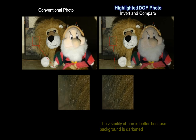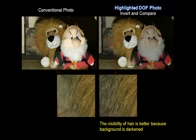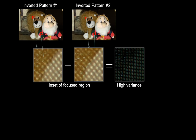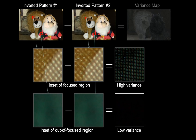A highlighted depth of field photo provides better visibility when the color is similar between foreground and background objects. The focused lion's hair is much clearer in the highlighted depth of field photo because the similarly colored background is dimmed. Also, the invert and compare method is very good for segmentation of high frequency features. Such a high quality segmentation image can be acquired with a depth-dependent variance map, produced by subtracting the inverted pattern images, in which high and low values are allocated to focused and out-of-focus regions respectively.